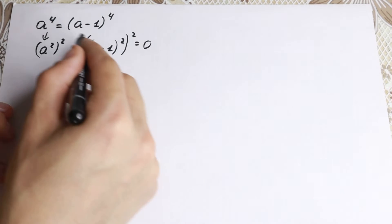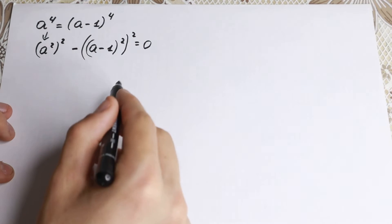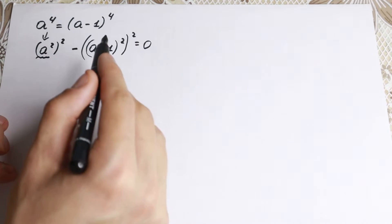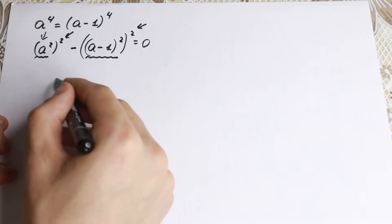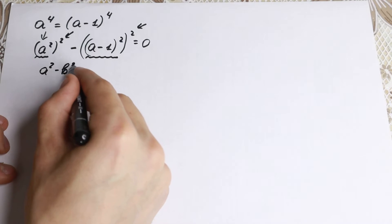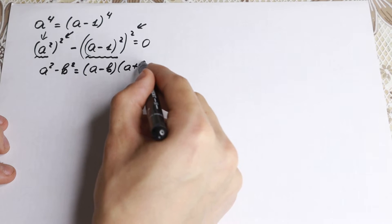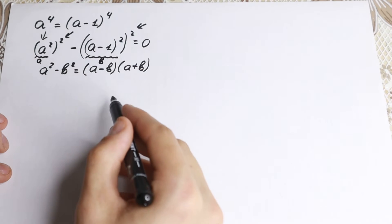I hope you understand what I did — I brought everything to the left and wrote it in the same way, because two times two is four the same on both sides. Now if you look closely, we have something squared and something squared, so it looks like a difference of squares: a-squared minus b-squared equals (a minus b)(a plus b). This is our school identity we need to know.